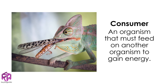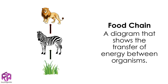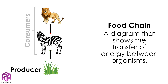Scientists show this in a diagram called a food chain, which shows the energy transfer between organisms. Here we can see the producer grass, which gains energy from sunlight, and the consumers zebra and lions, which gain their energy by eating other organisms.